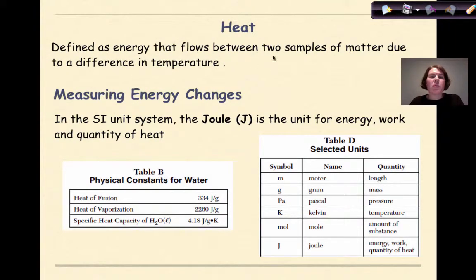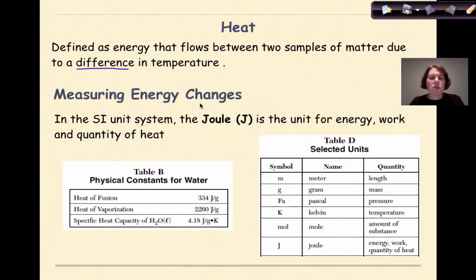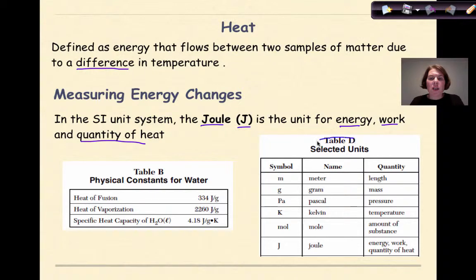What is heat? Heat is defined as energy that flows between two samples of matter due to a difference in temperature — one where it's hot and another where it's cold. When we measure energy changes, we use the joule, represented as a capital J, as the unit for energy, work, and quantity of heat. You can find that on Table D of your reference table.